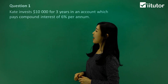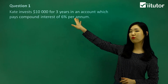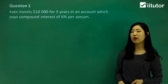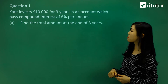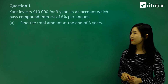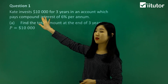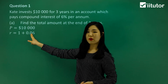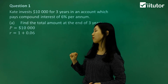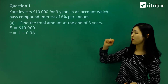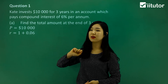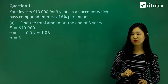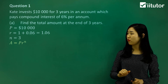Question one: Kate invests $10,000 for three years in an account which pays compound interest of 6% per annum. We want to find the total amount at the end of the three-year period. Our principal P is $10,000 — that's how much Kate invests at the beginning. The rate R is one plus the interest rate; the interest rate is 6%, so that's 0.06 as a decimal, plus one gives us 1.06. And n is just three, because it's going for three years.